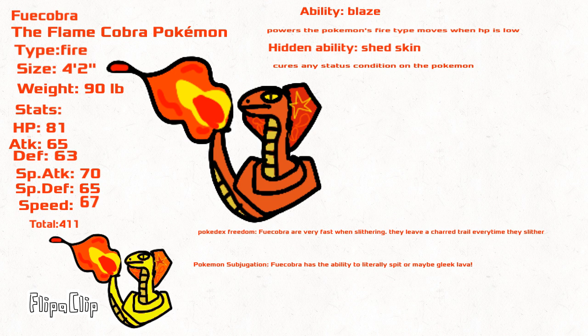Fue Cobra can slither very fast. They leave a charred trail every time they slither. Fue Cobra has the ability to spit or gleek lava. And yes, that was a spitting cobra reference, even though this line is obviously based off a King Cobra.